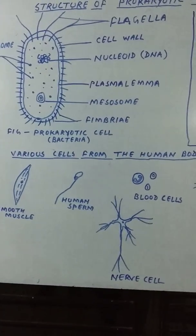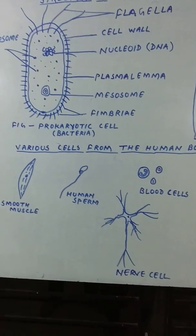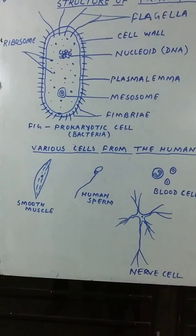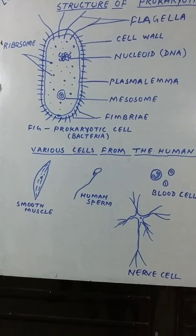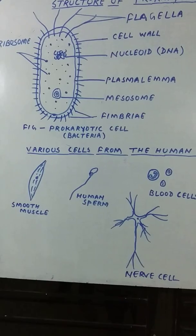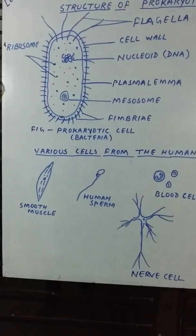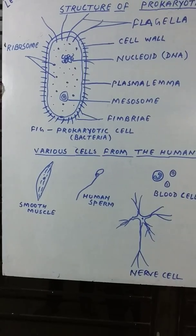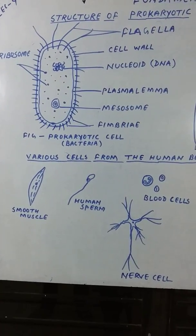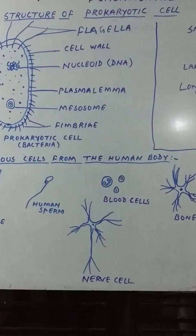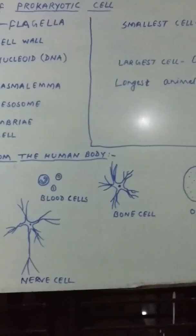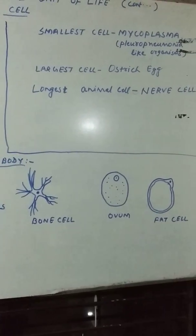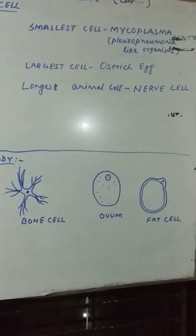Whenever we talk about shape and size of cells, you should note down: the shape and size of cells vary considerably, but all of these are ultimately determined by the specific function of the cell. Its shape depends mainly on the function of the cell.